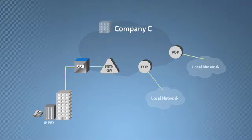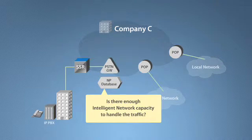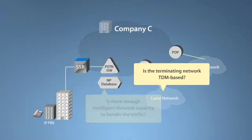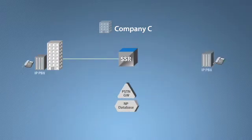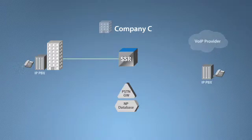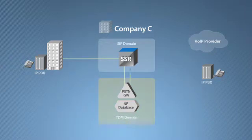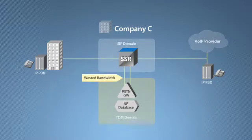They could simply dump calls onto the PSTN gateway and use the existing TDM-based NP solution to route calls to the correct network. This works if there is enough intelligent network capacity to handle the traffic, and the terminating network is TDM-based. If the terminating number is an IP PBX or belongs to another voice-over-IP provider, then the call has to be shuttled from voice-over-IP to TDM and back again. Running pure voice-over-IP calls over the TDM network to perform number portability wastes capacity on the PSTN gateway and degrades voice quality.